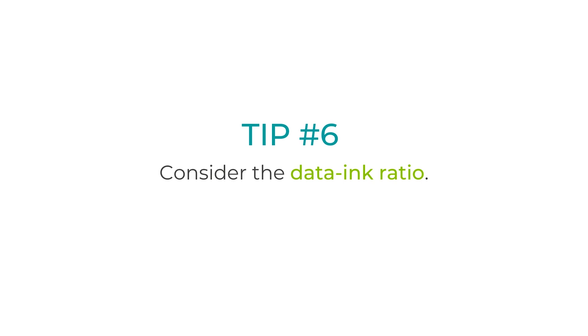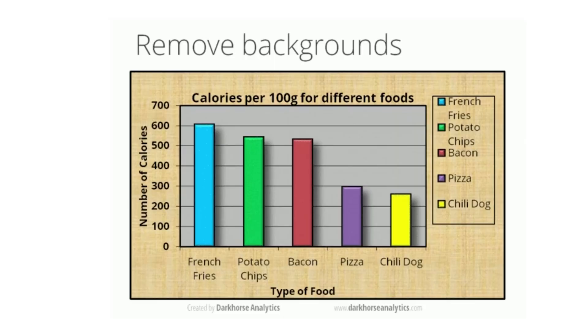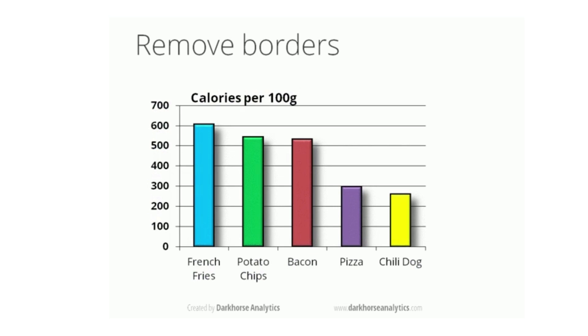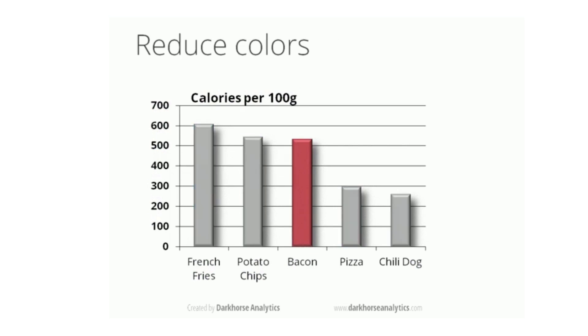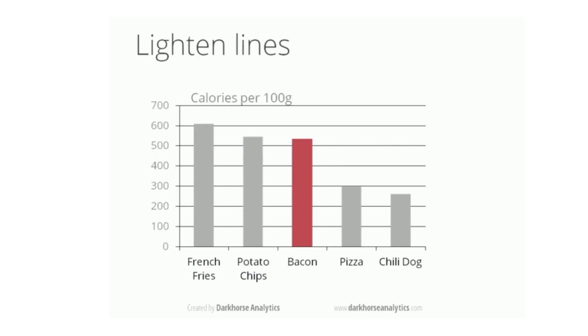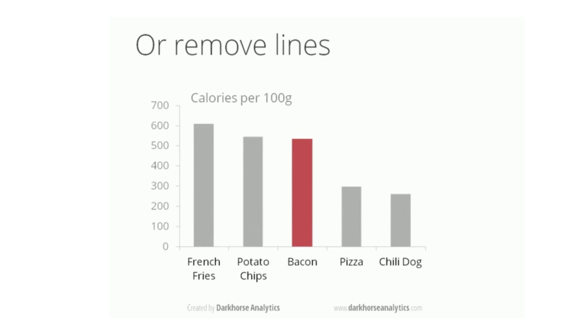A final tip when creating visualization is to consider the data ink ratio. Data ink ratio is a term that comes from Tufte's design rules. Imagine the amount of ink it would take to print your visualization — most of the ink should be spent on your data elements rather than decoration or ornamentation. In other words, less is more. You don't want to make a chart 3D just because it looks cool, especially when it distracts the viewer. You can also see in the example created by Dark Horse Analytics that data becomes more understandable and therefore impactful as unnecessary elements are removed.